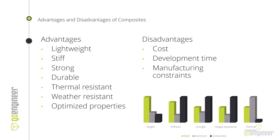Composites are a really great material when you want to customize properties for a specific application. On the downside, they're definitely more expensive than traditional metals. Development time is generally longer than typical metals, since the benefit of optimized properties requires more engineering time on the front end. We also have some specific manufacturing constraints, though we won't go too far into those details here.